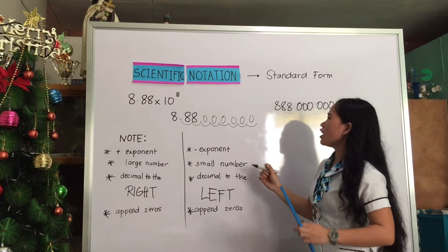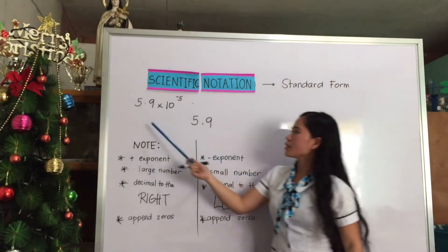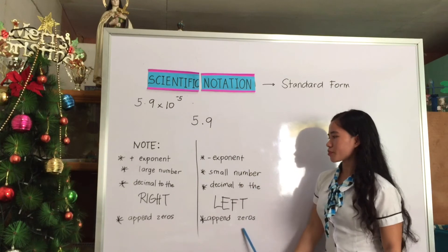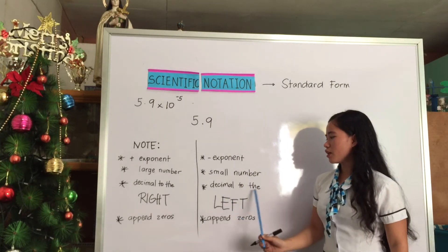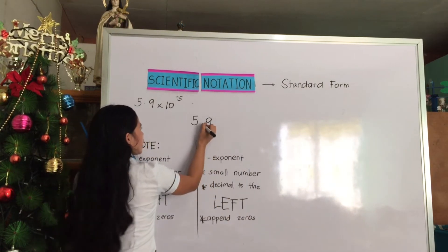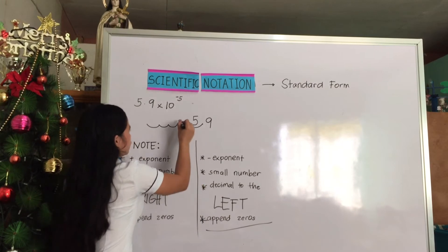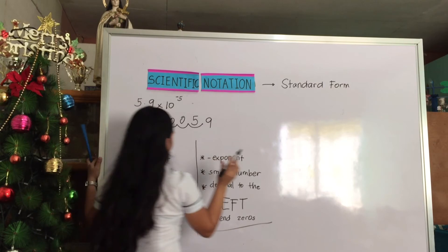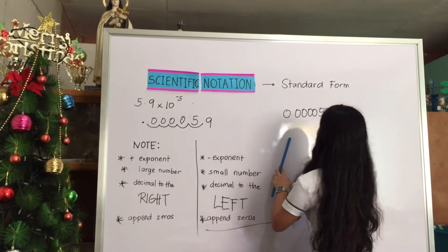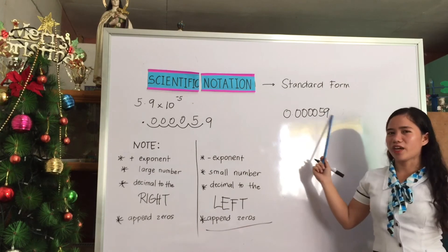Another example is 5.9 times 10 to the power of negative 5. Since the exponent is negative 5, we move the decimal to the left 5 times: 1, 2, 3, 4, 5. Then we append zeros: 1, 2, 3, 4. The standard form of 5.9 times 10 to the power of negative 5 is 0.000059. Do you get it, class?